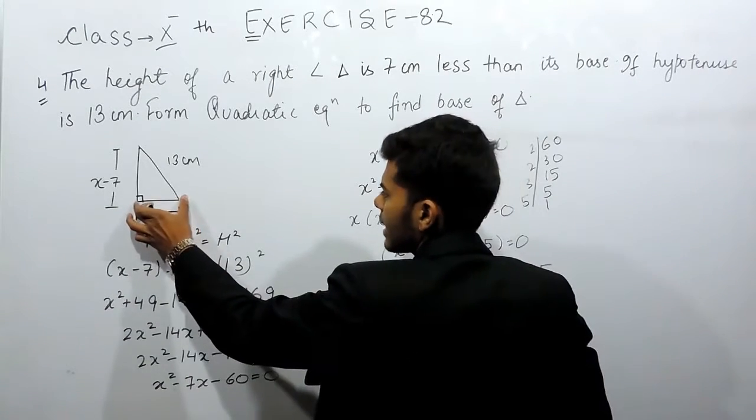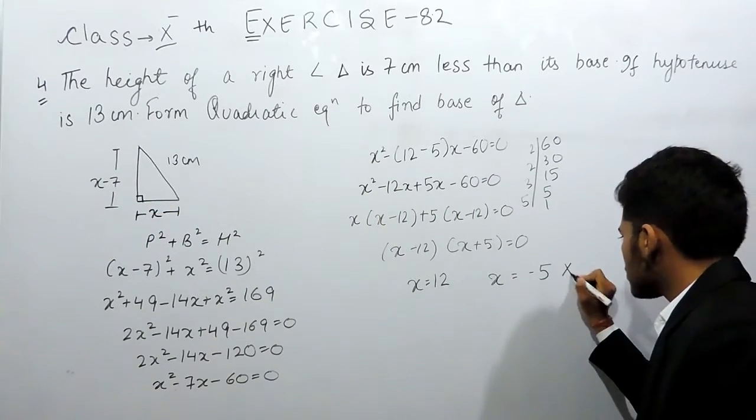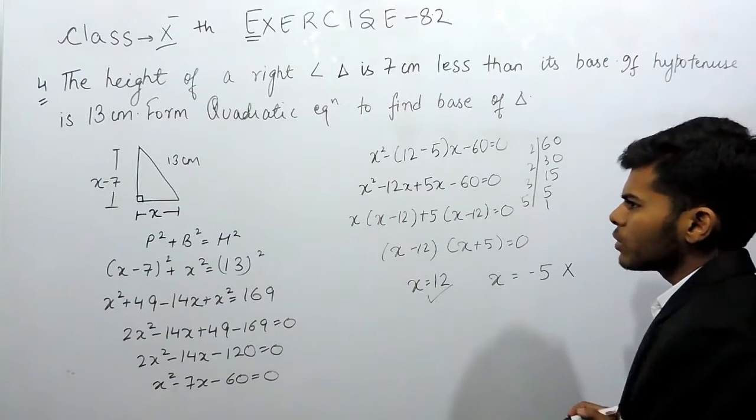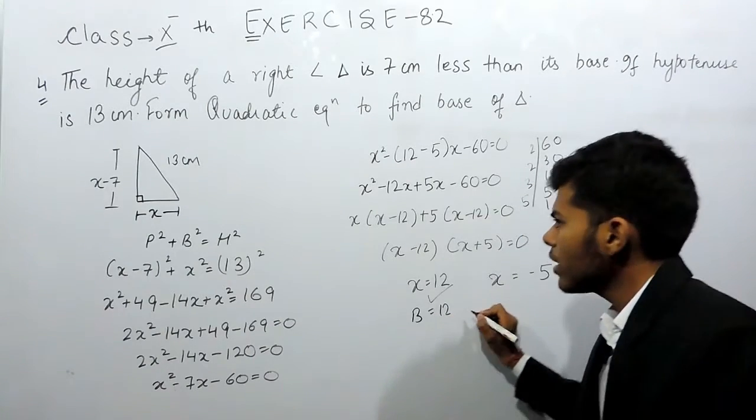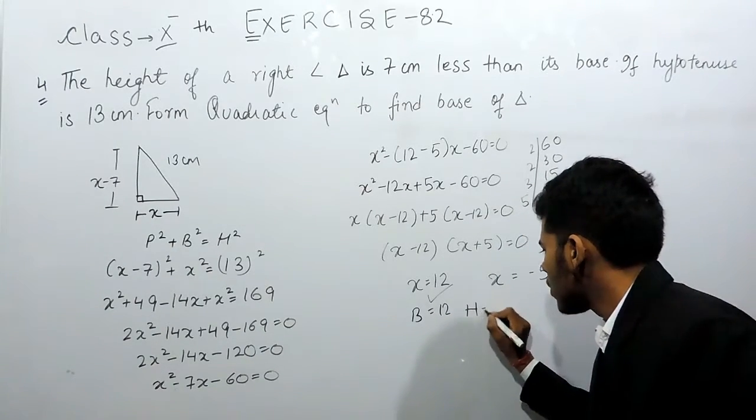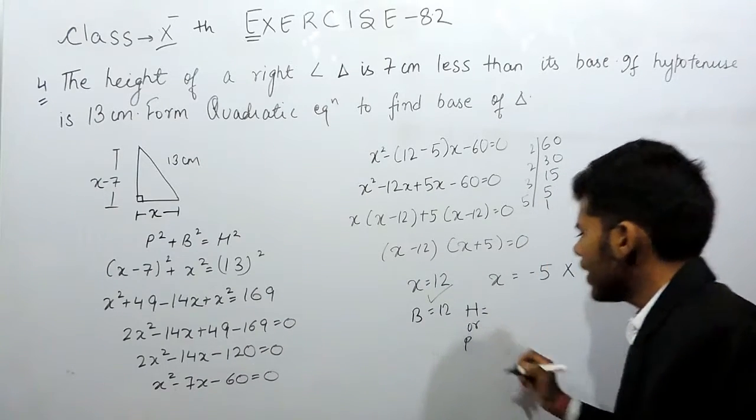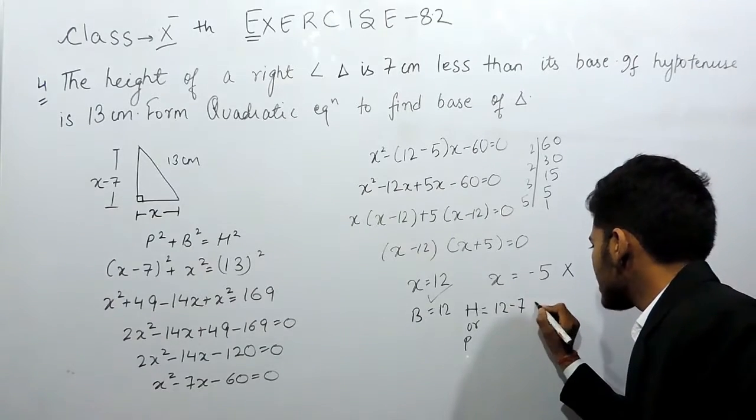But this basically is distance and distance can never be negative, so this value will not be there and the value of the base will be equals to 12. So base equals 12, therefore the height or the perpendicular will be equals to 12 minus 7, that is equals to 5.